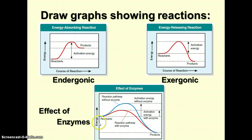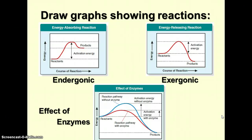Enzymes change the path of reactions because they lower the amount of energy required to start the reaction — they reduce the activation energy. This shows a much different path with the enzyme than without, making the reaction occur more quickly, using less energy in the cell, which is better for the cell.